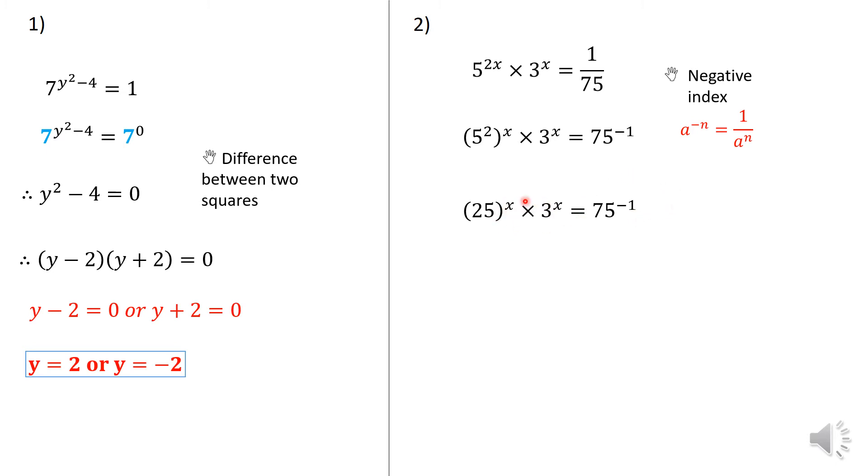So here you realize they have got X's. The bases are not the same, but you are multiplying. But the indices are the same. So you multiply the bases, you keep the indices. So 25 × 3 gives you 75.